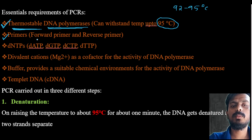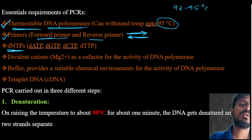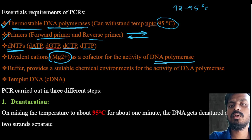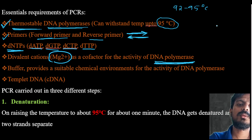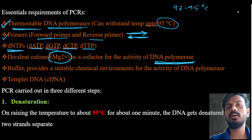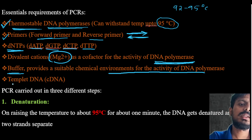Next component is primers — one forward primer and one reverse primer. Forward primer moves in the forward direction and reverse primer moves in the reverse direction. Then dNTPs — DATP, DGTP, DCTP, and DTTP. Next is the divalent cation magnesium ion, which is a cofactor for Taq DNA polymerase and increases its enzymatic activity. Finally, buffer provides the chemical environment for DNA polymerase activity, and template DNA or cDNA from which the copies are formed.